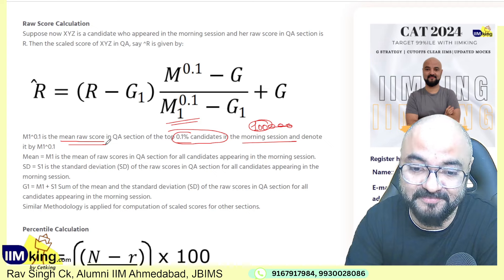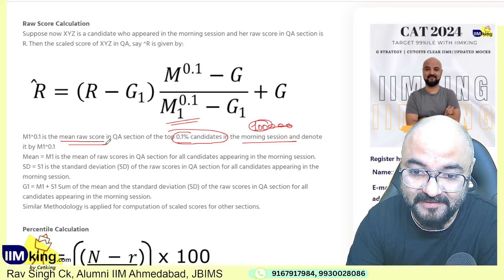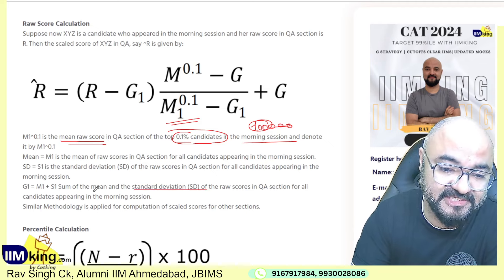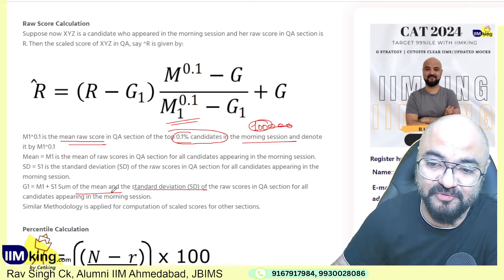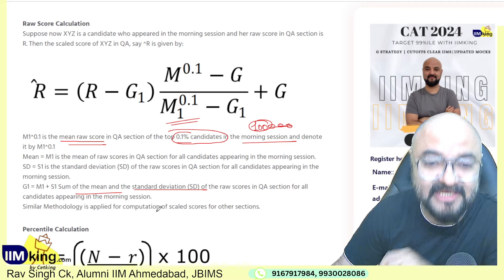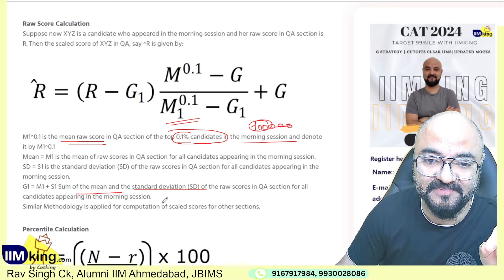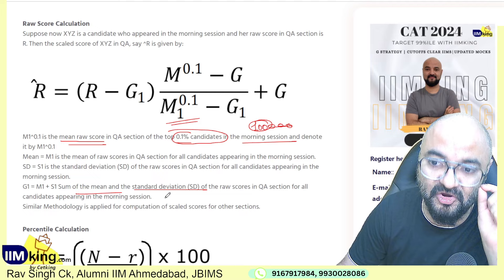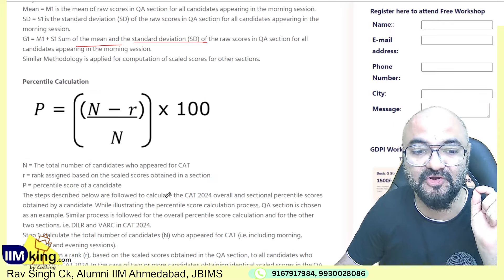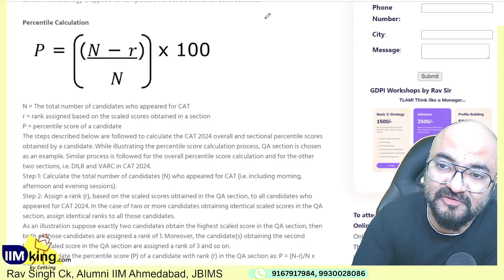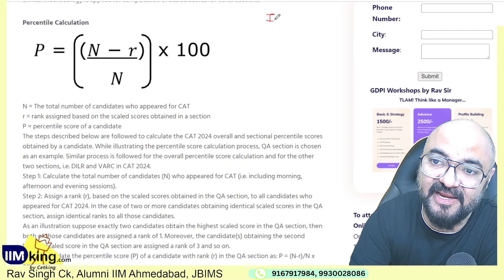This is a main fundamental problem. Us ka standard deviation aur mean lekar calculate hota hai — that's itna detail mein jaane ki zaroorat nahi hai. So basically your raw score is calculated on the basis of the CAT toppers — top 100 students of your slot — then, joh most of the time will be coaching classes ke bachche aur IITians.